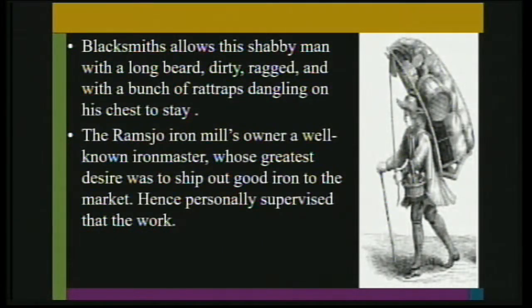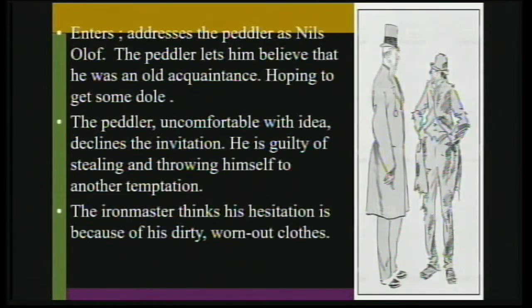The arrogant blacksmith nods his head and says he can stay. The peddler is in no mood to talk and stays on. This mill is owned by an iron master — a very well-known man who ships iron to other markets and personally supervises his forge. At that point of time, the iron master comes for inspection, and the moment he sees the peddler, he walks up to him and addresses him as a friend — a case of mistaken identity.